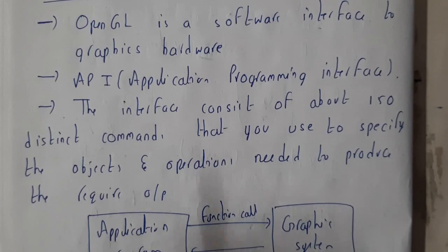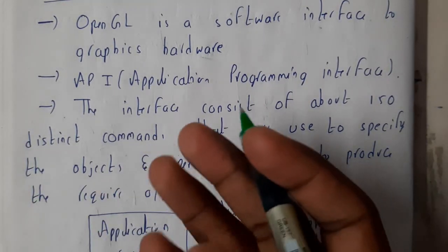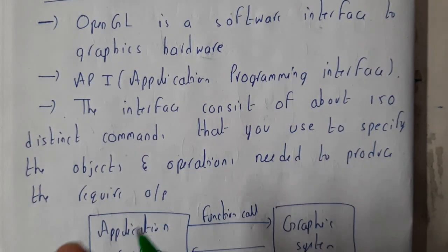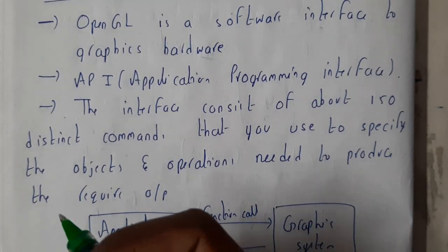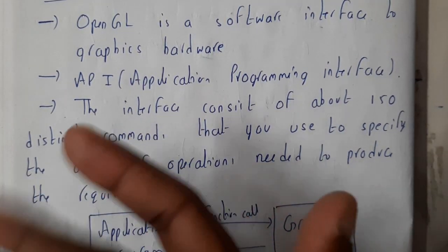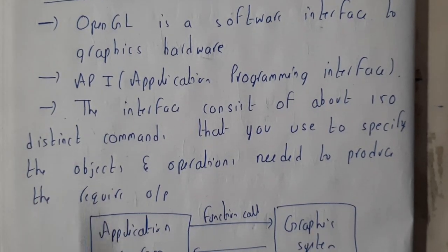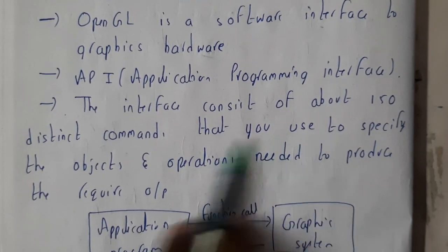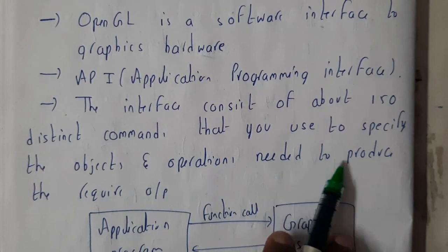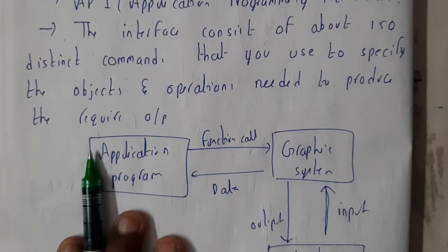We know about commands like glVertex, glOrtho2D, glFrustum, glutFrustum, glutOrtho2D - we know only a few, right? There are almost 150 distinct commands in OpenGL that you use for specifying the objects and operations needed to produce the required output.